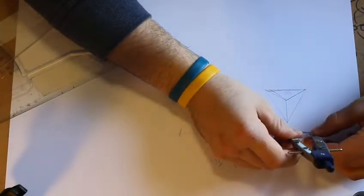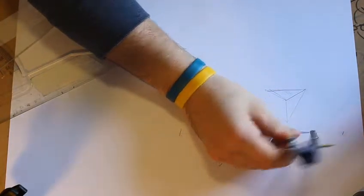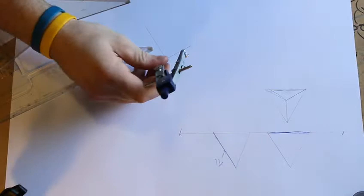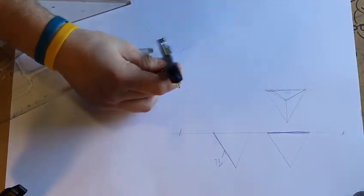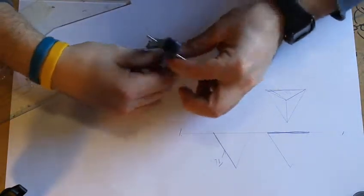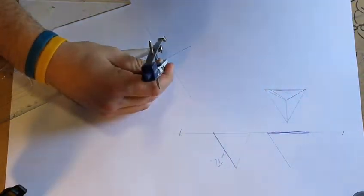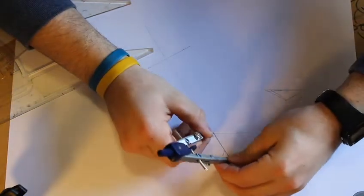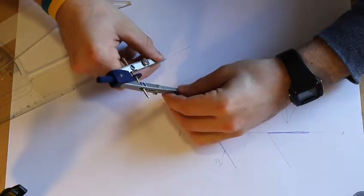I can then use the width that I know, so the base, half the base of my triangle, rotate it like so. And I can take my true length of my height, so I can bring that from here and that will give me my first triangle.